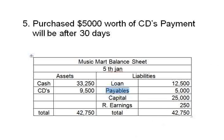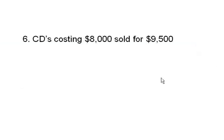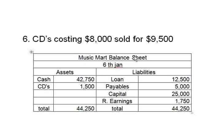Transaction six: CDs costing 8,000 are sold for 9,500. Again we are making a good profit by selling above cost. This is a similar transaction to what we already did, so you should be able to work out the answer. You can pause if you want.